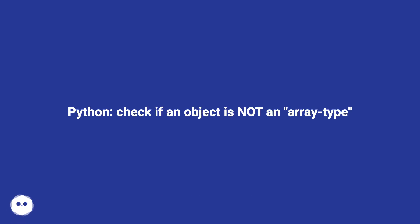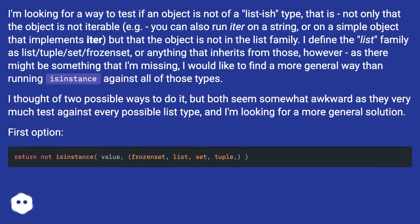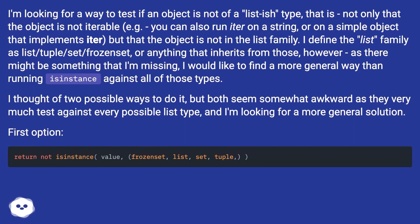I'm looking for a way to check if an object is not an array type, or more specifically, not of a list-ish type. That is, not only that the object is not iterable — for example, you can also run iter on a string, or on a simple object that implements iter — but that the object is not in the list family.